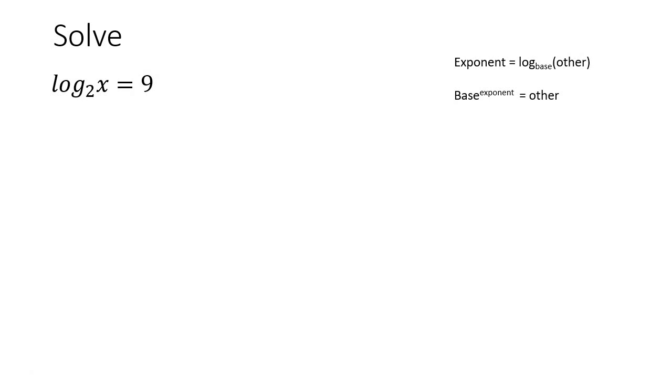Here's another one. So let's start by copying this once again. So the thing that's by itself that's the exponent, the thing over there is called the base, and then this is the other. So if we're to go rewrite it now as an exponential you would take your base which is 2, your exponent which is 9, and then the other which is x.